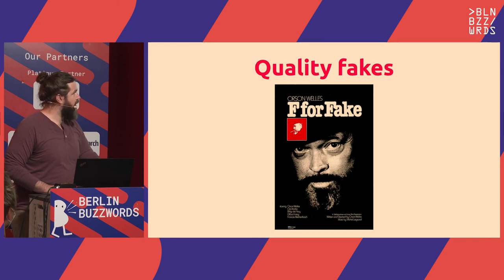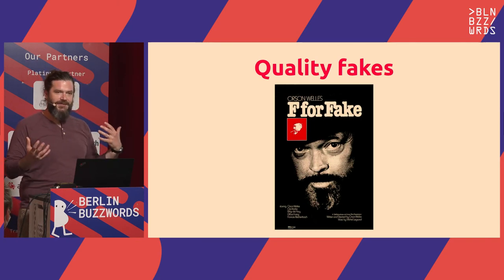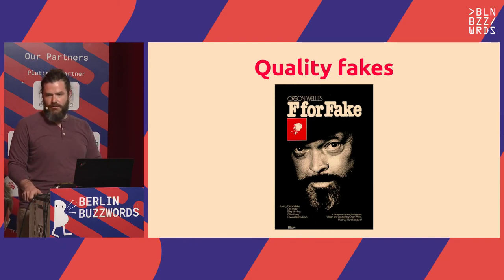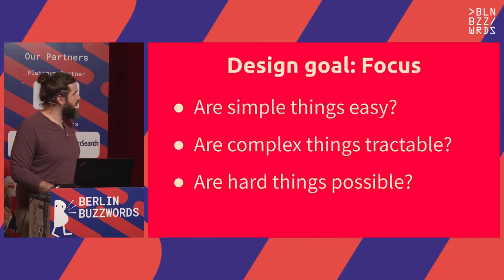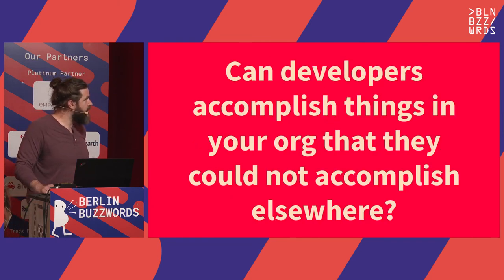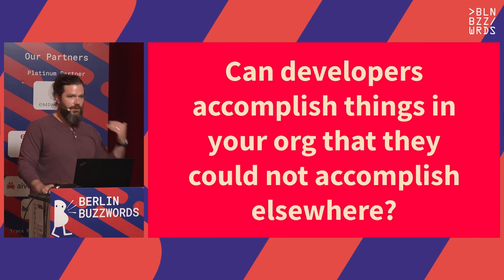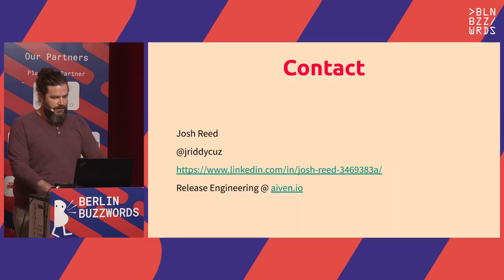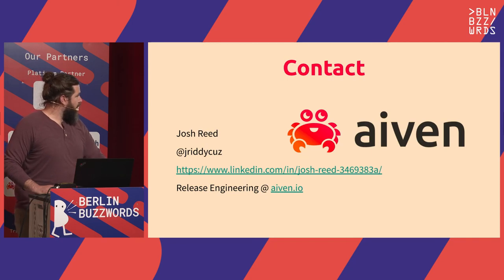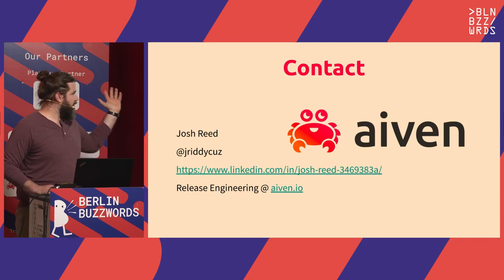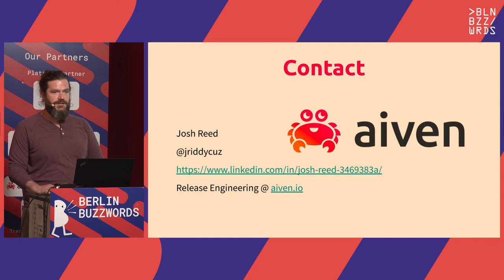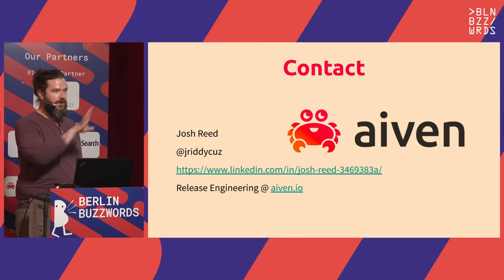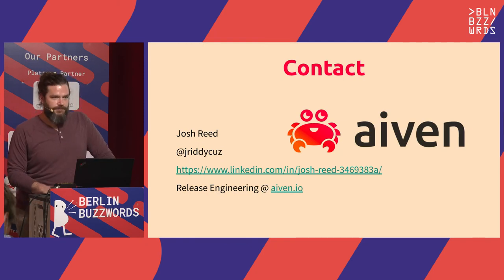Another really important thing is you'll sometimes have systems you cannot really mock out, so you'll need to invest in having quality fakes. The last question I want to ask you: can the developers at your company accomplish things in your org that they couldn't accomplish other places? Do your processes enable them to move faster, to build more than they could somewhere else? If not, then maybe you need to be investing more in these processes and tools. I work in release engineering at Ivan.io — we don't sell a CI/CD product, but we do sell cool database stuff and data streaming technologies. Thank you.